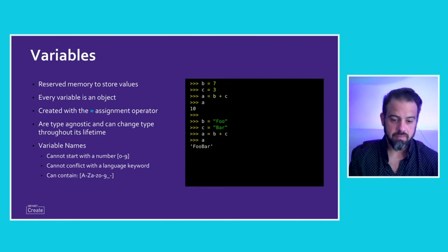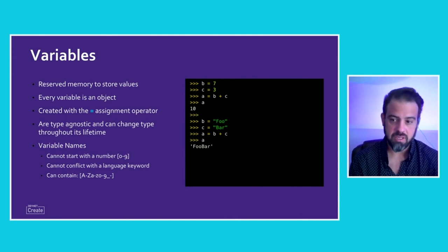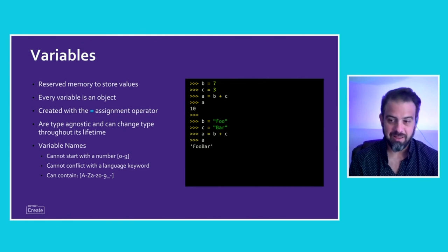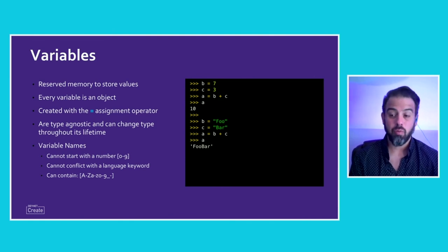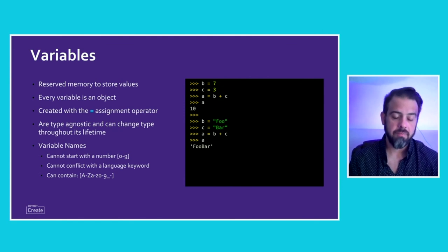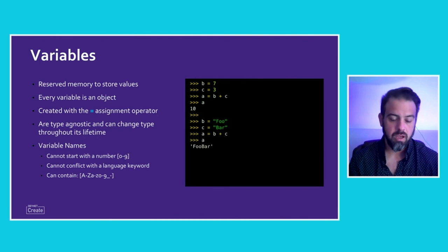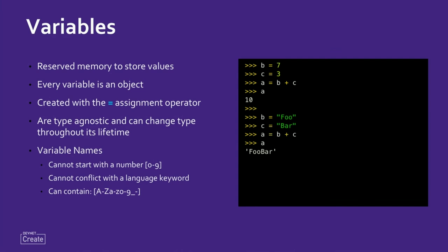Variable names cannot start with a numeric digit and cannot conflict with a language keyword — you can't define a variable as 'if.' From Python 3.5 to 3.6, the keyword 'async' was added for asynchronous interactions. Anyone who had implemented a function or variable called 'async' would have problems. One library in the network programmability ecosystem — I believe NetMiko — implemented a function called async, causing a syntax error in Python 3.6 or higher, requiring an update to fix it.